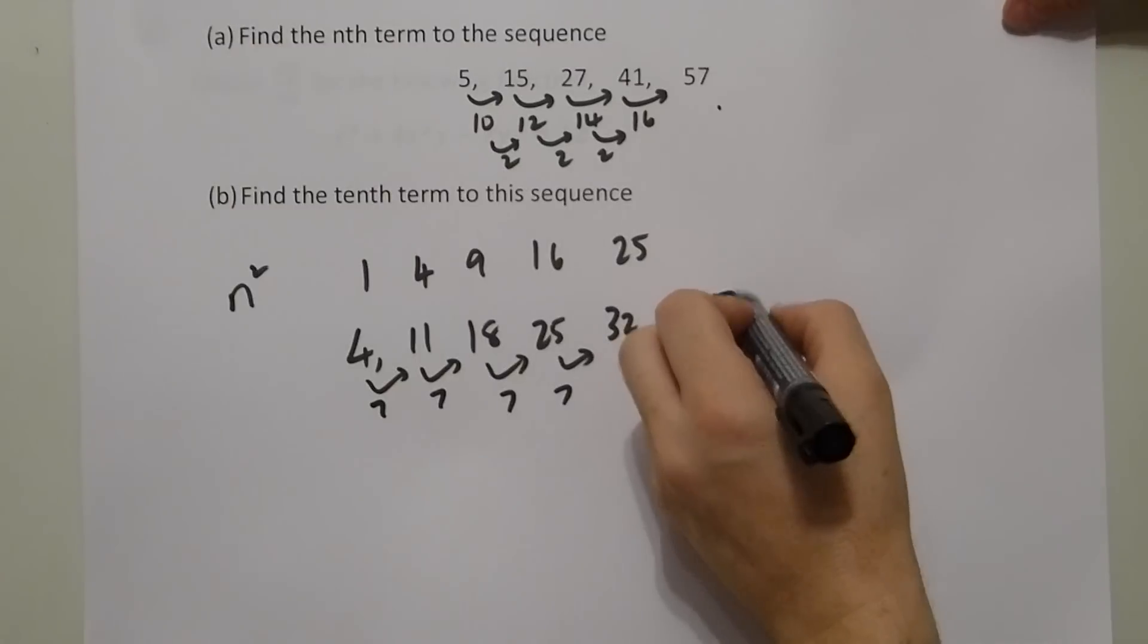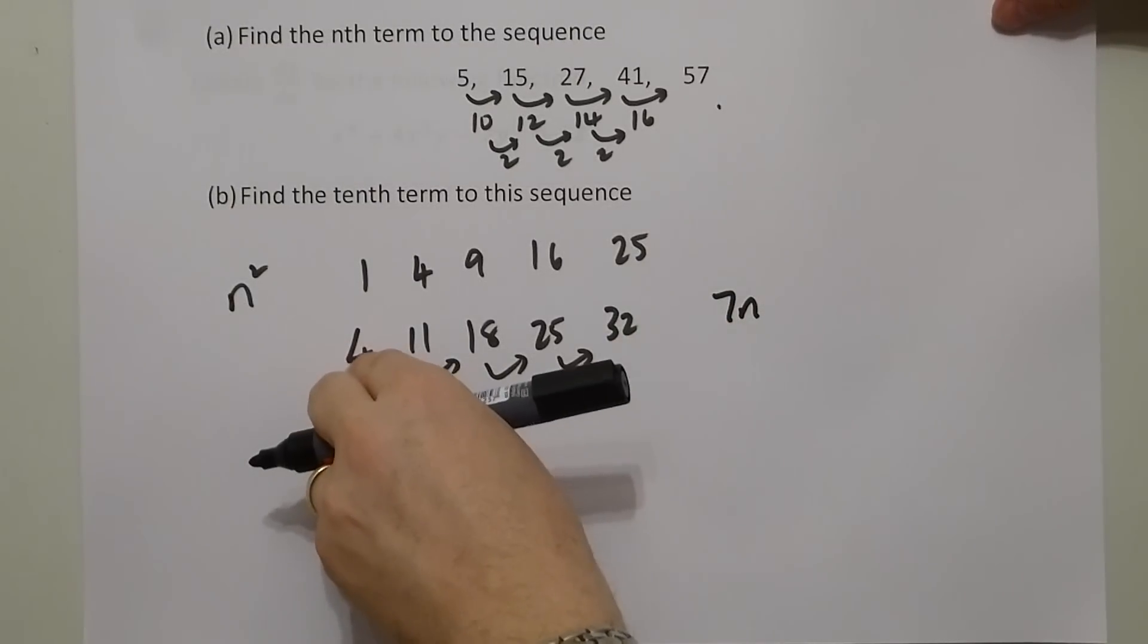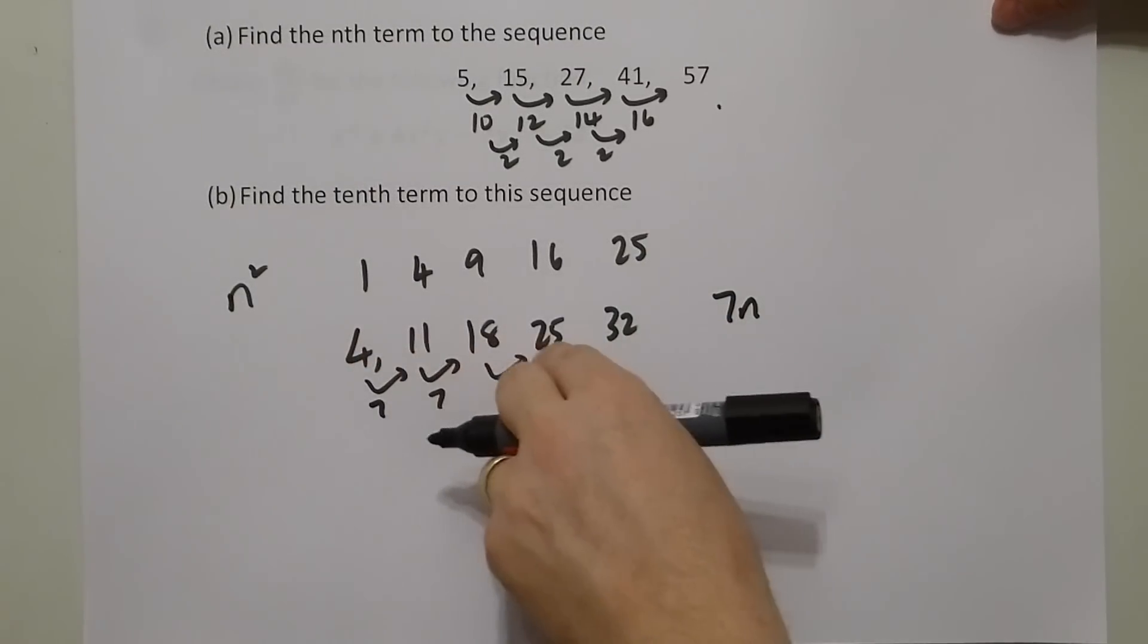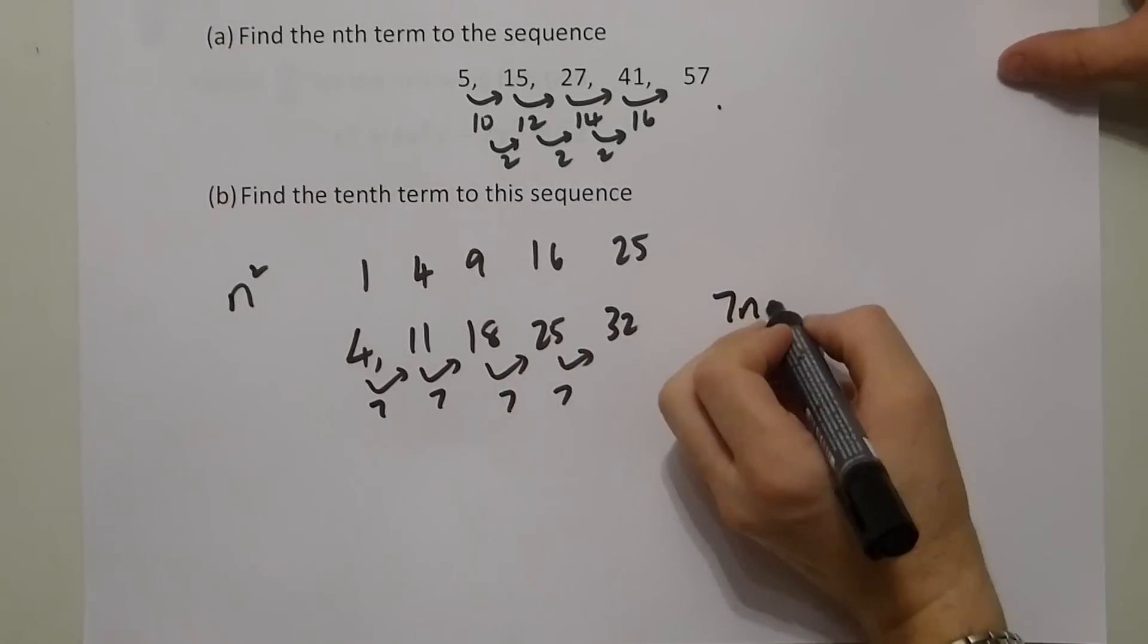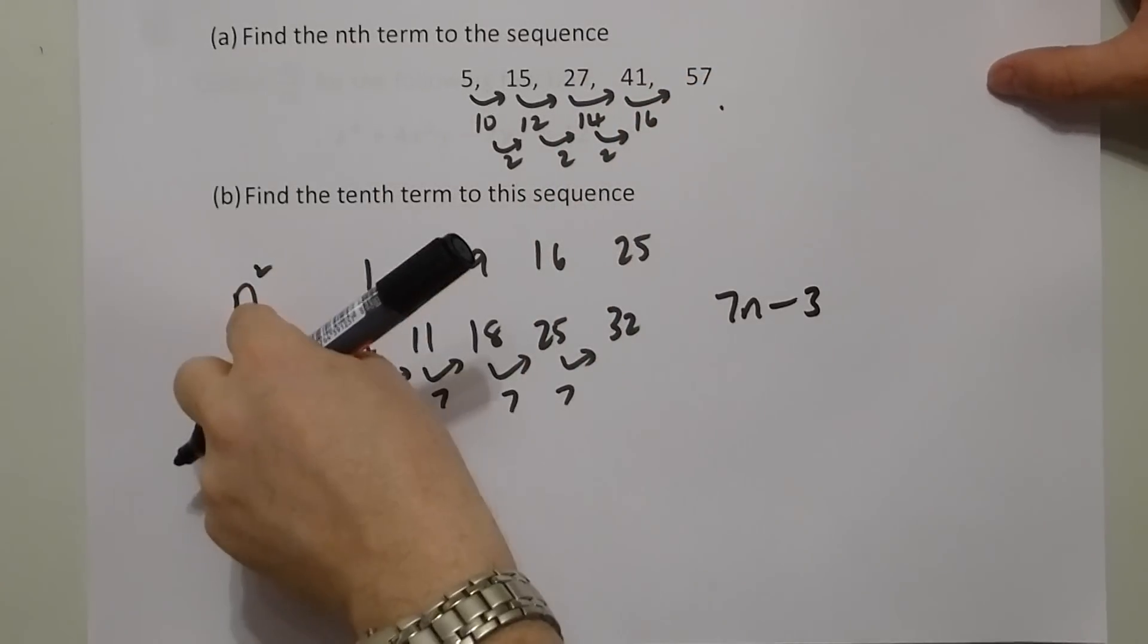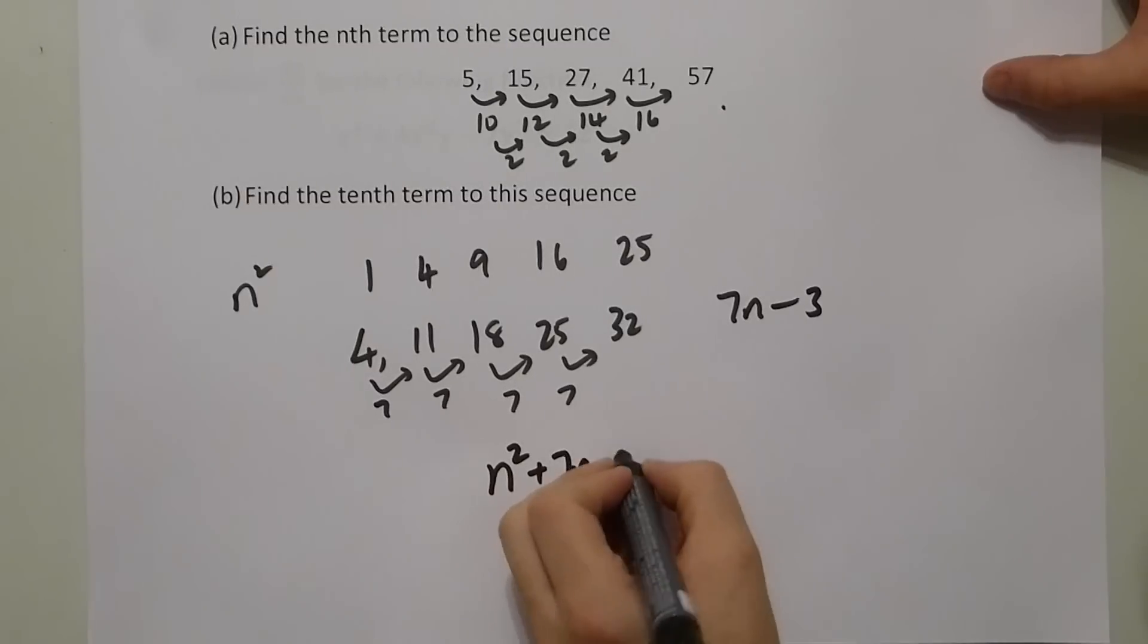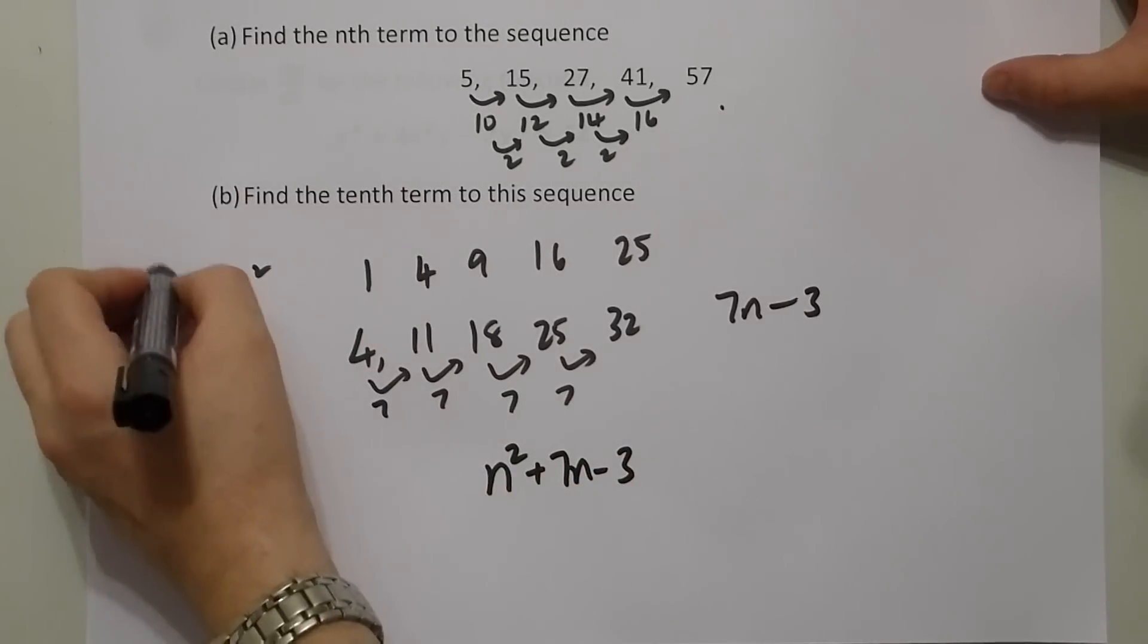And this sequence is a 7 times table, which is 7, 14, 21, 28, etc., but minus 3. So the nth term for this sequence is n squared added to 7n minus 3. Answer to part A.